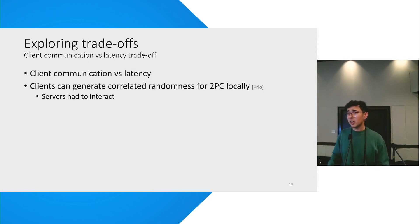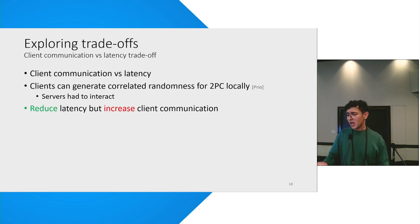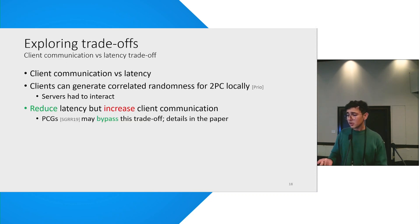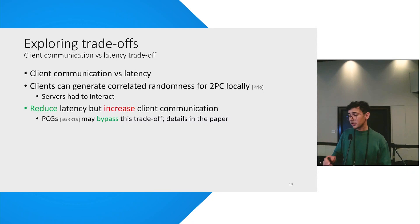A similar observation was made in the Prio paper as well. So if we use clients to send this correlated randomness, obviously the client communication increases, but we reduce the latency of our protocol by a lot. In the paper, we also talk about using random correlation generators to actually bypass this trade-off, but I won't go into the details — you can look at the paper.